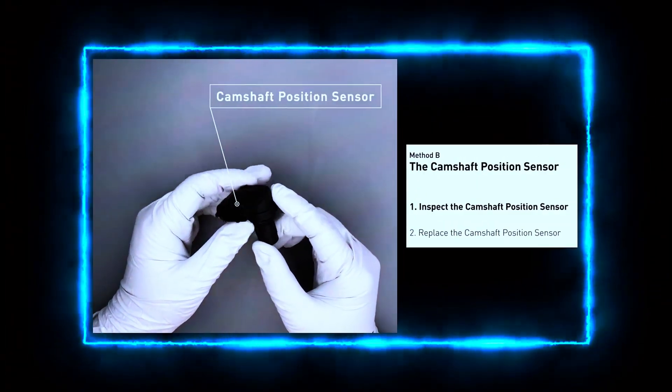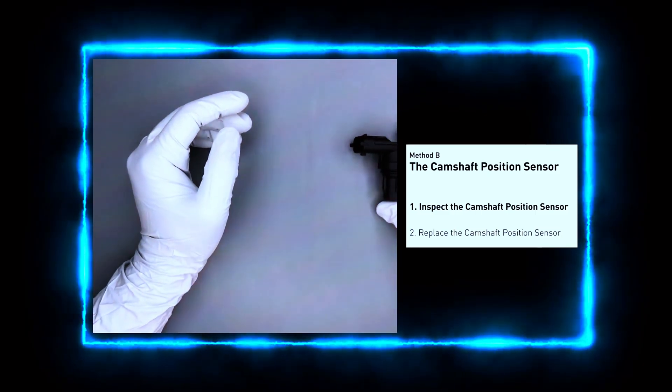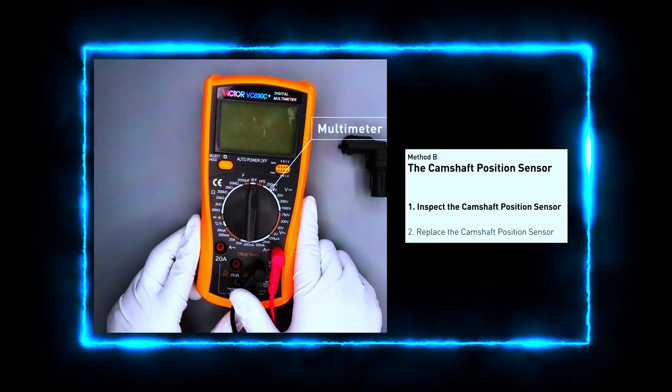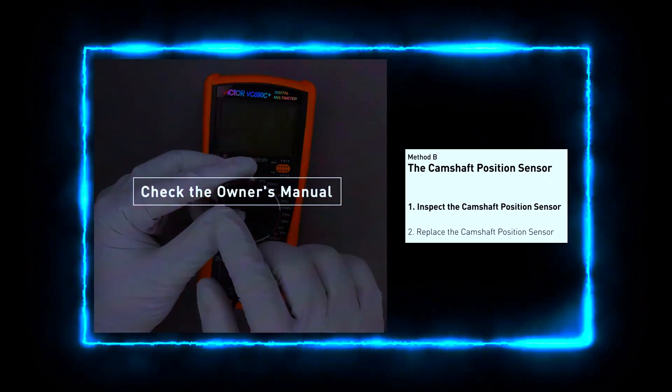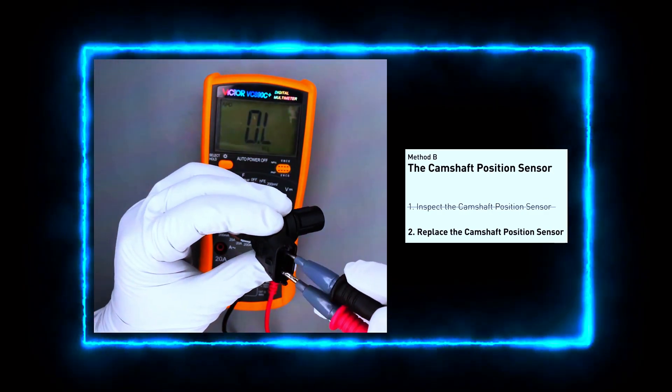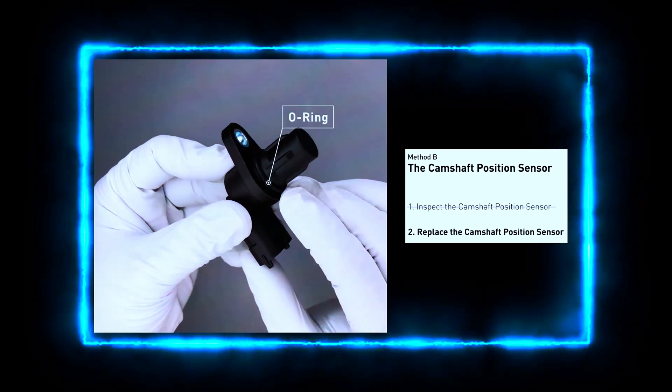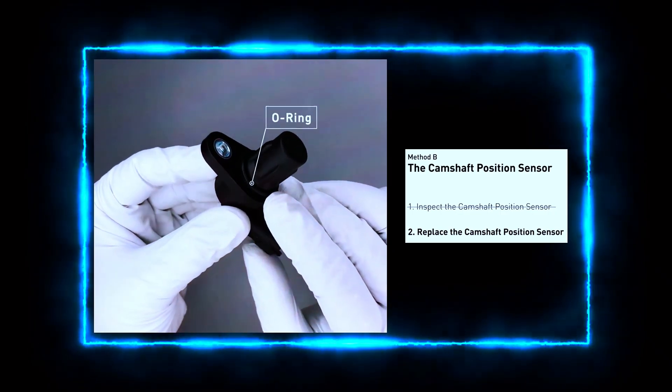Next, we'll test the sensor to see if it's faulty. Unplug the sensor and check the wiring for any damage. Use a multimeter to check the sensor's resistance and voltage. Typically, the resistance should fall between a specified range. Check your car's manual for the exact values. If the sensor isn't within range, it's time to replace it.